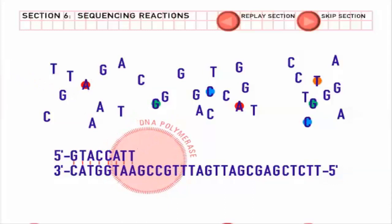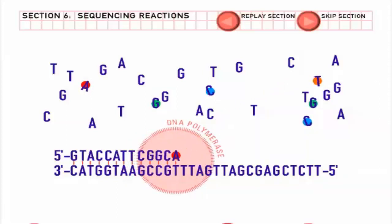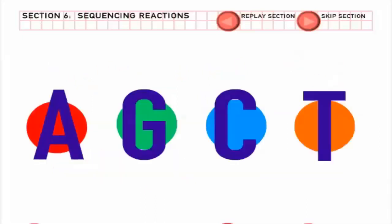Among all the free bases swimming in the solution, a few have an extra chemical part. The chemical is a fluorescent dye. When the colored bases attach to the growing strand, the extra chemical part keeps the new DNA strand from growing any further. A different colored dye is attached to each of the four kinds of bases.